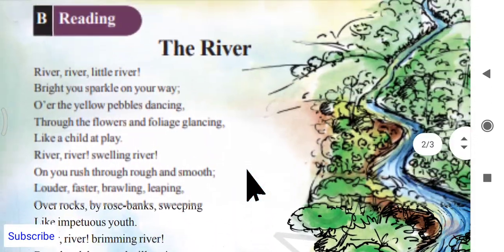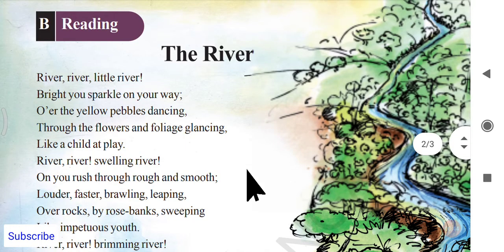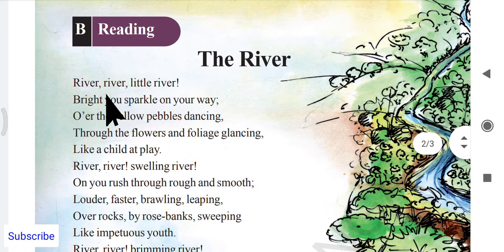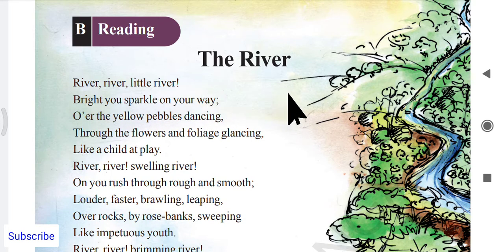Bowles composed this poem about the river, speaking about the river's qualities — how it is, how it passes, how it moves, where it is ending, and what its features are. Everything is given in this poem. The title is 'The River' — river, little river.